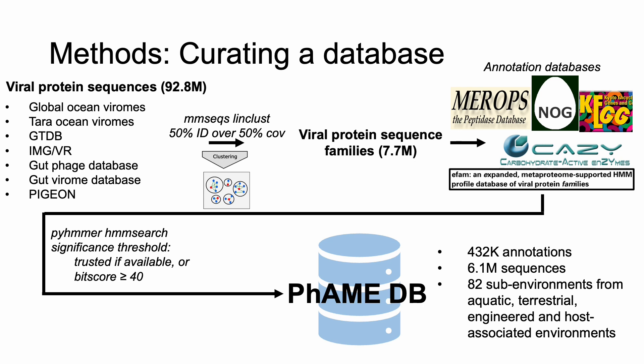When bundled with all this metadata, FameDB encompasses over 82 sub-environments grouped into four broad categories of aquatic, terrestrial, engineered, and host-associated environments.